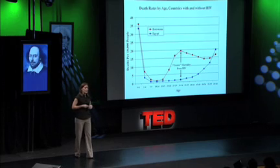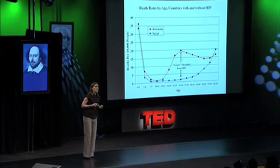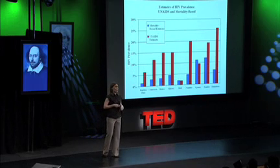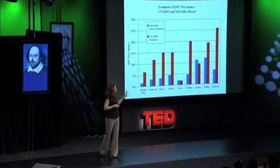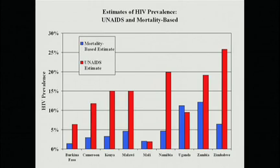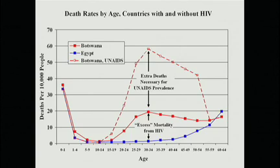Using this technique, the estimates of prevalence are very close to what we get from testing random population samples, but very different from what UNAIDS reports. This graph shows UNAIDS-estimated prevalence versus mortality-based estimates for the late 1990s in nine African countries. Almost without exception, the UNAIDS estimates are much higher than the mortality-based estimates. UNAIDS says the HIV rate in Zambia is 20%, while mortality estimates suggest it's only about 5%. For UNAIDS prevalence to be correct, we'd need to see 60 deaths per 10,000 rather than the 20 per 10,000 we actually observe.